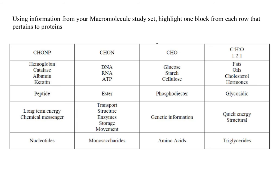In each row, you're going to highlight or circle the box that goes along with proteins. In the first row, you're going to circle or highlight the elements associated with proteins. The box you should have highlighted or circled is the box with CHON. Proteins are made up of carbon, hydrogen, oxygen, and nitrogen.